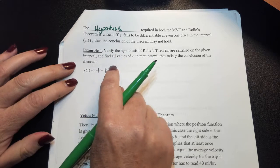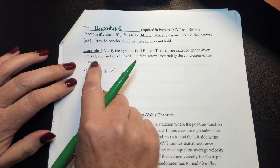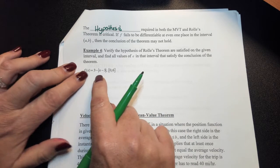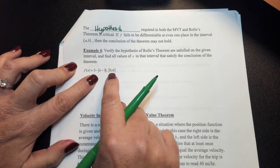For example, verify the hypothesis of Rolle's theorem and find all values of C in that interval that satisfy the conclusion of the theorem. We're looking at my closed interval from 0 to 6.